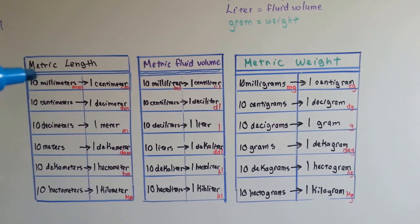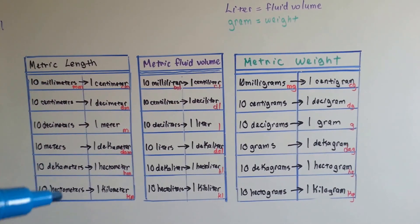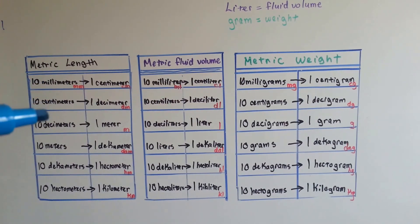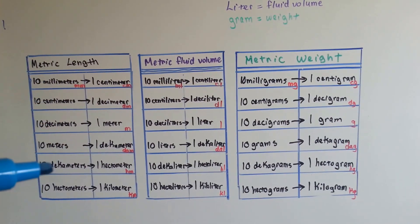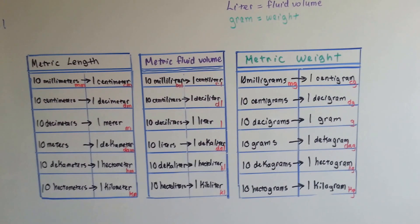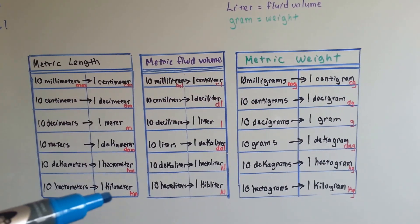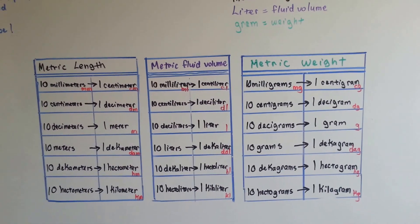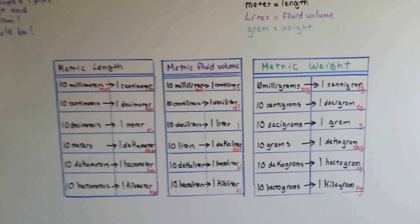If you know the order from smallest to largest, from millimeter, centimeter, decimeter, meter, decameter, hectometer, kilometer, you'll know them all. Some people say kilometer, some people say kilometer, and it really doesn't matter which one. They're both considered correct.